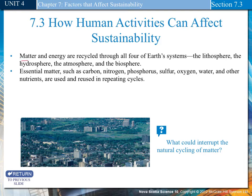Matter and energy are recycled through all four of Earth's systems: the lithosphere, the hydrosphere, the atmosphere, and the biosphere. Essential matter, such as carbon, nitrogen, phosphorus, sulfur, oxygen, water, and other nutrients, are used and reused in repeating cycles.